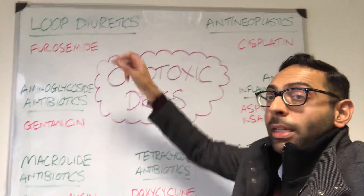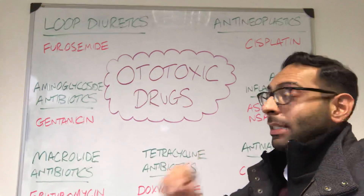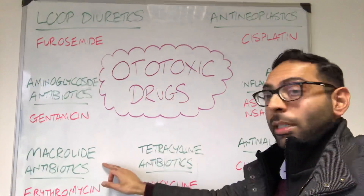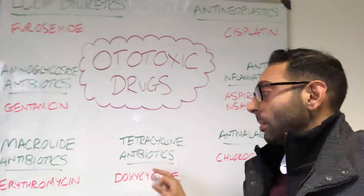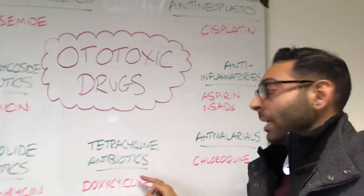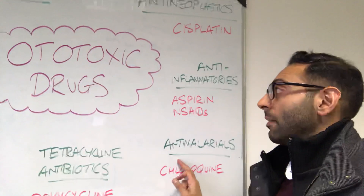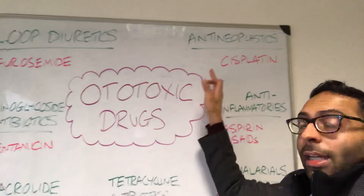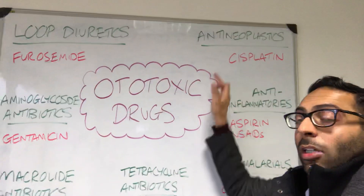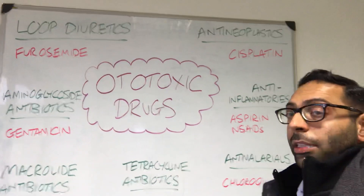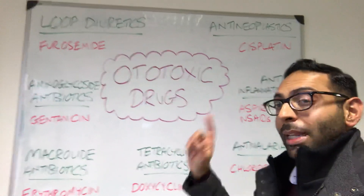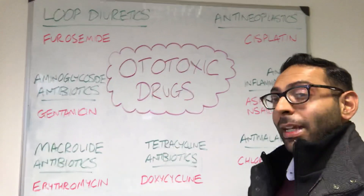Remember they all are in a loop: it starts with loop diuretics at the top, then it's all about the 'antis' — antibiotics type 1, antibiotics type 2, antibiotics type 3, anti-malarials, anti-inflammatories, and anti-neoplastic medications. Of course there are a few others as well, but remember these and hopefully it will help in your exams.